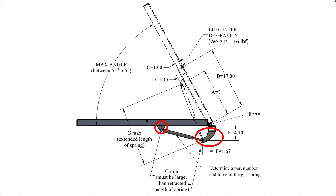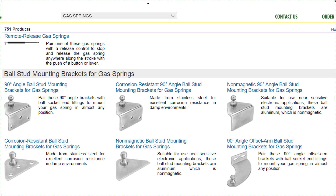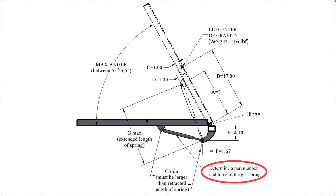Gas springs have ball sockets on each end, and we can purchase brackets with ball studs that will fit in the sockets. Dimensions D, E, and F in this figure depend on which brackets we will be purchasing. I have listed values for these dimensions because we have already picked out the brackets. Here's the McMaster website showing that these brackets are readily available — this type of bracket on the bottom end and this type for the top end. The real challenge for us will be to determine the correct size gas spring and how to position it correctly.